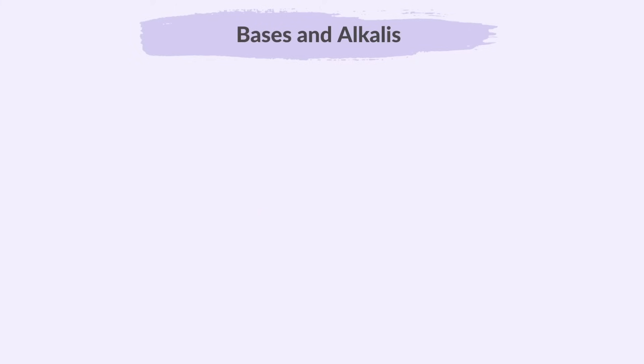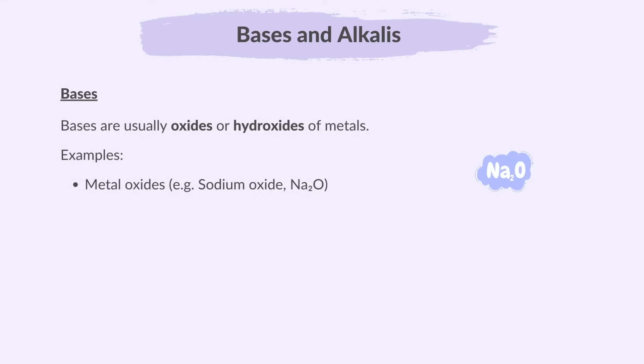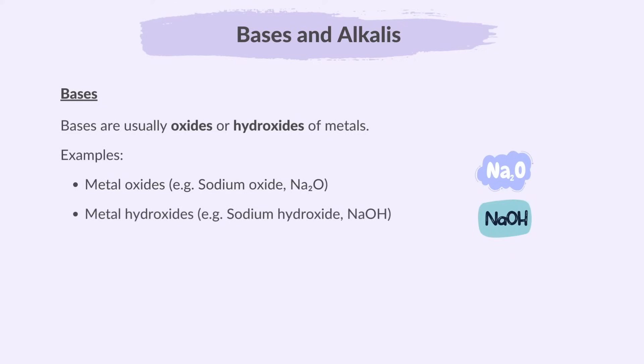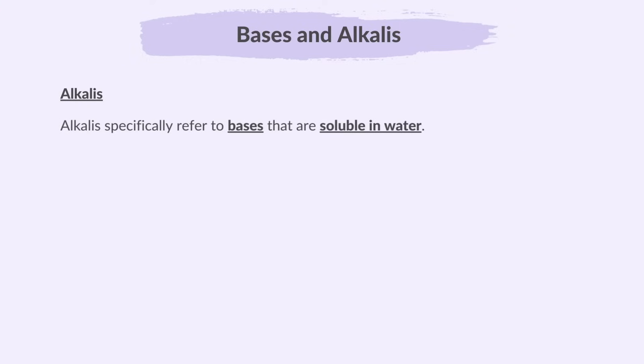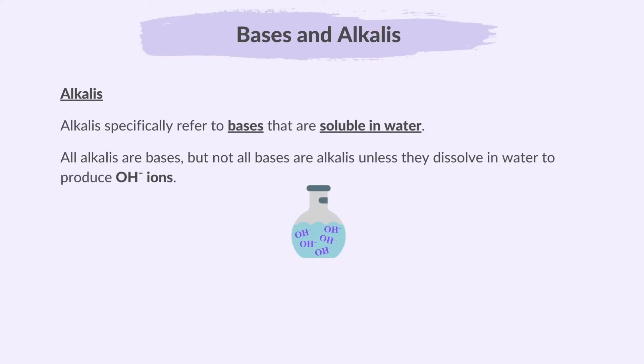Now let's distinguish between bases and alkalis. Bases are usually oxides or hydroxides of metals. Examples include metal oxides like sodium oxide (Na₂O) and metal hydroxides like sodium hydroxide (NaOH). Alkalis specifically refer to bases that are soluble in water. All alkalis are bases, but not all bases are alkalis — only those that dissolve in water to produce hydroxide ions.